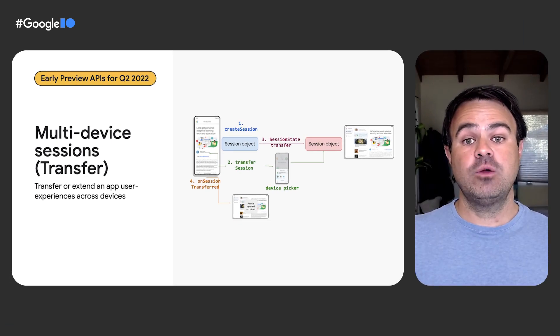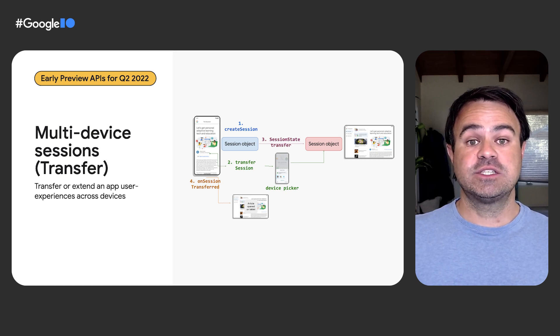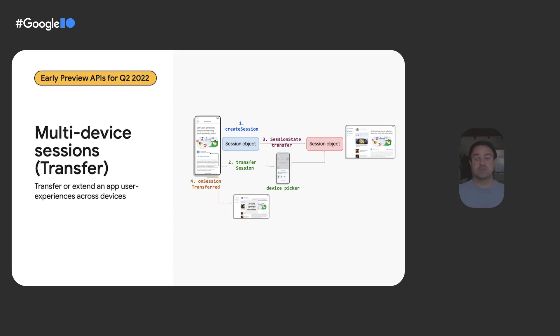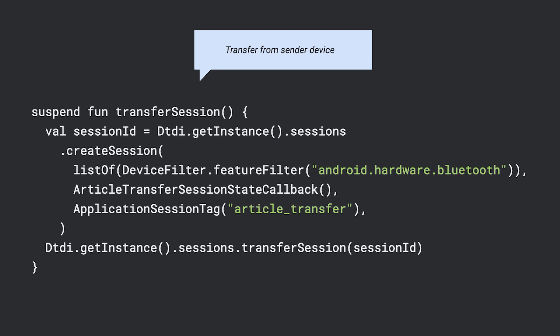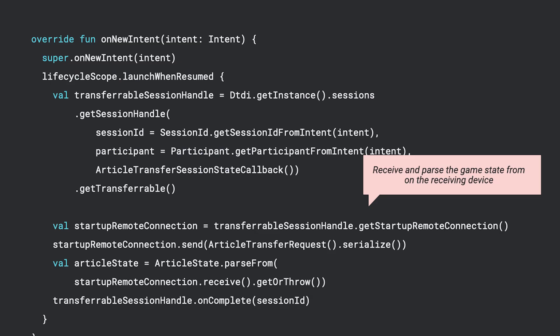Layered above the discovery, wake-up, and secure connection APIs, we also provide an additional abstraction to make it easier to manage an experience across devices. One convenience our sessions API provides is a way to move an experience from the sending device to a receiver device — this is designed for building great, seamless handoff experiences. Creating a session will implicitly trigger the device discovery flow described earlier. Session creation also requires you to provide a session state callback implementation that handles state changes to the session. Here, we're using the callback implementation to transfer a news article from the sender and handling the transfer on the receiving device.